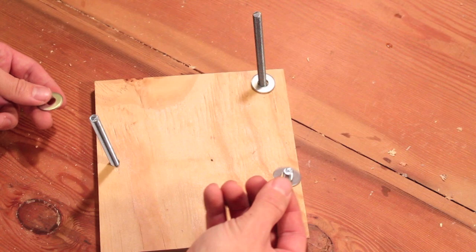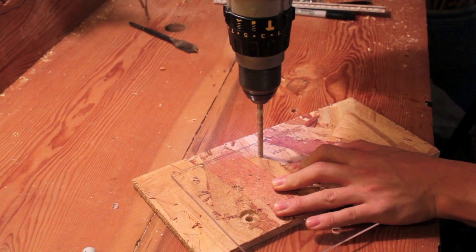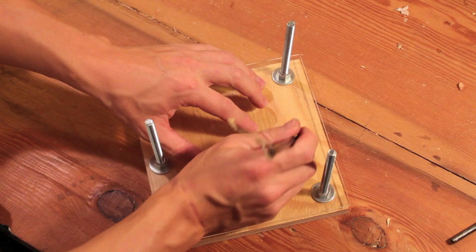Next, drill a hole the same diameter as the lens in line with the front two bolts. To make sure the LED light is centered below the lens, use the hole you just drilled to mark the position of the light. Be sure not to drill all the way through the base.